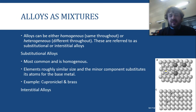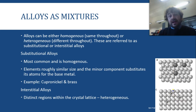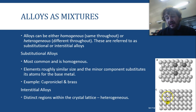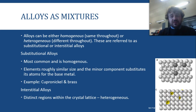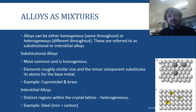Interstitial alloys are not the most common, but they're very, very important — we use them a lot. They have distinct regions within the crystal lattice, which makes them heterogeneous. Even though the material might look the same throughout, on a crystalline level there are different areas. The minor component atoms sit in between the major component's atoms — they fit into the little holes. The most important example is steel, which is essentially iron and carbon — an interstitial alloy.